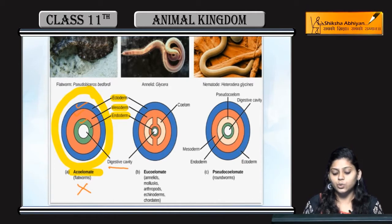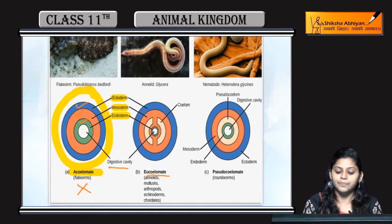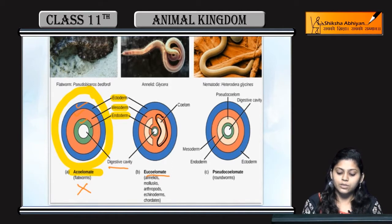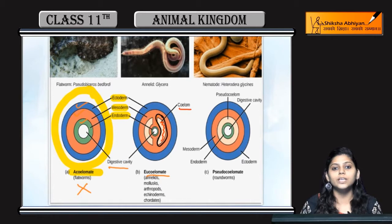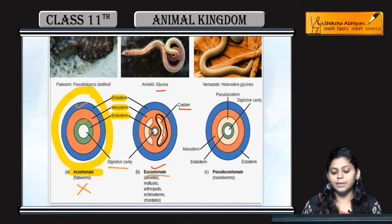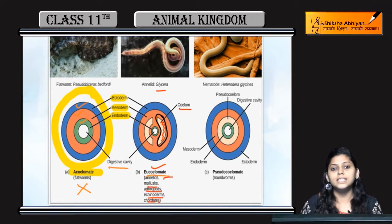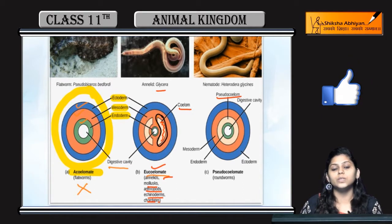Next we look at eucoelomates, which have a true coelom. You can see this red structure is the mesodermal lining, and within the mesodermal lining the coelom is present. The coelom contains coelomic fluid. This is the true coelom, and examples include annelids, mollusks, arthropods, echinoderms, and chordates — all these are eucoelomates.